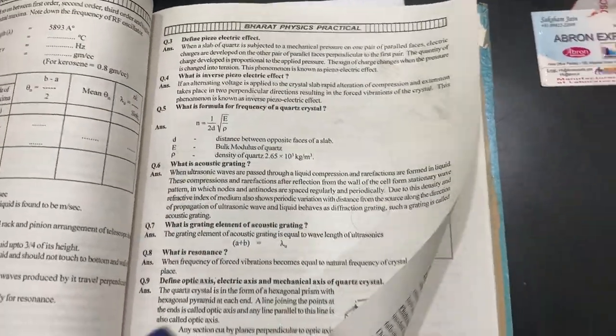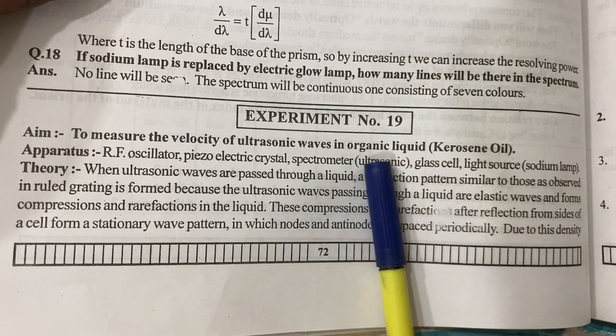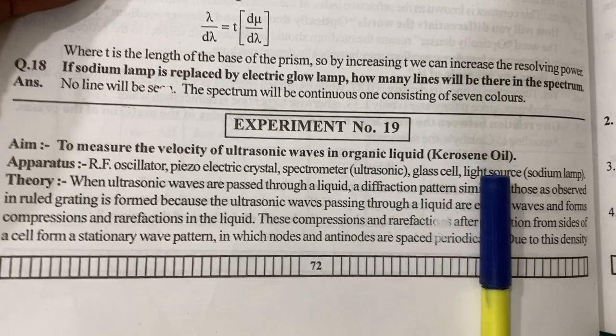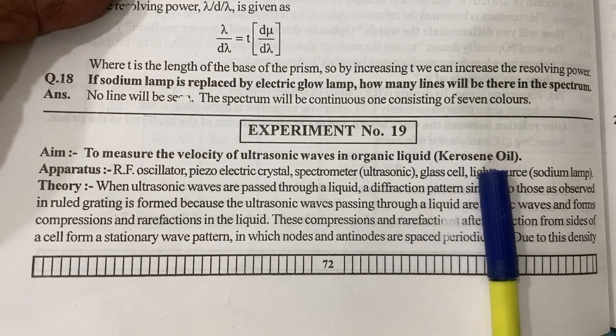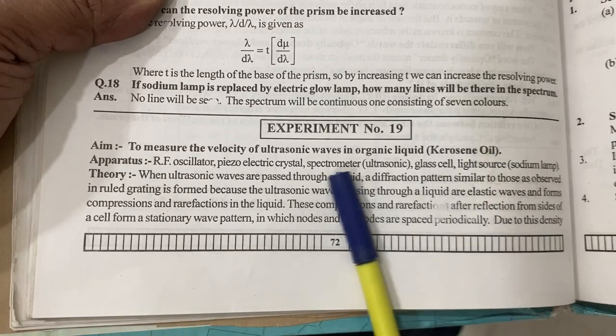This is to measure the velocity of ultrasonic waves in organic liquid. It can be kerosene, benzene, or aviation fuel. Kerosene is not available nowadays, so aviation fuel can be used, or you can use benzene or xylene.